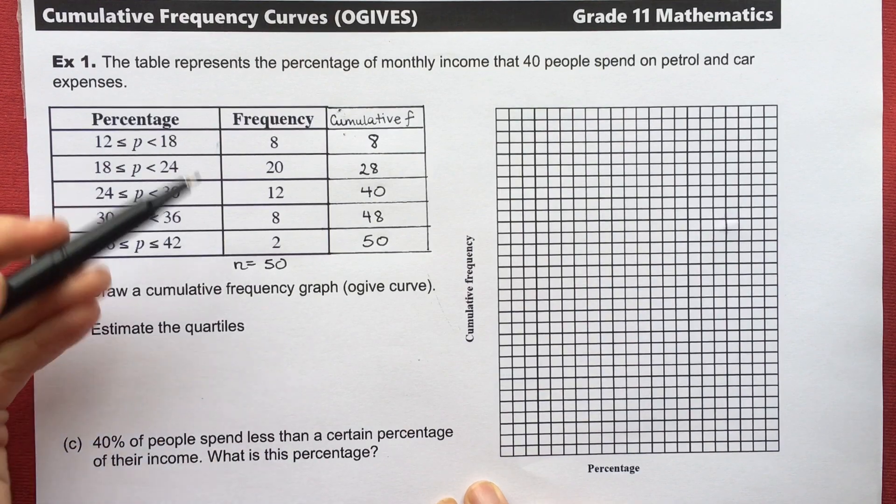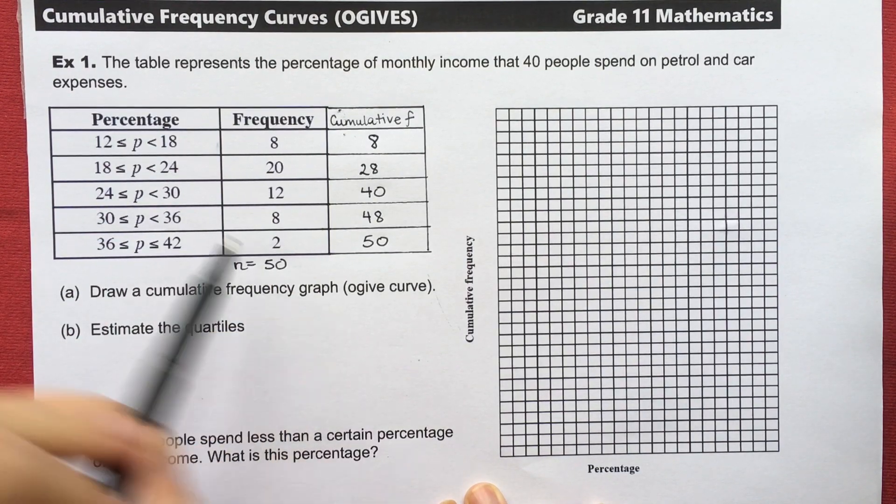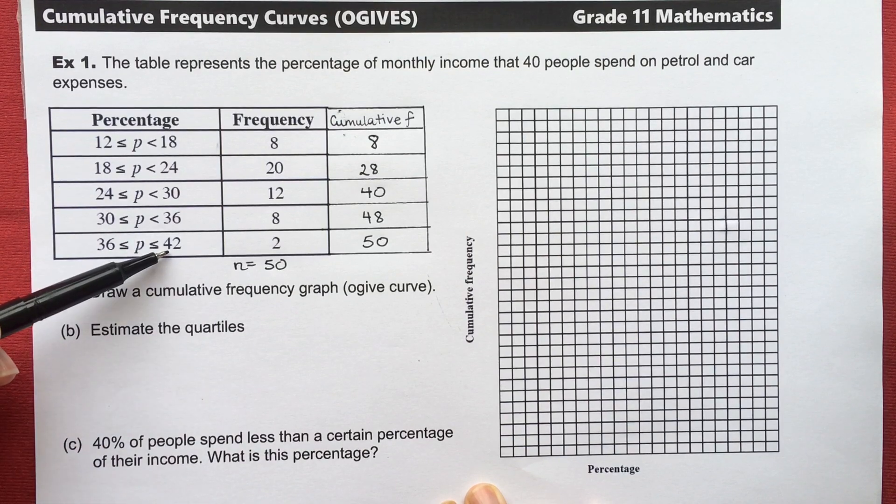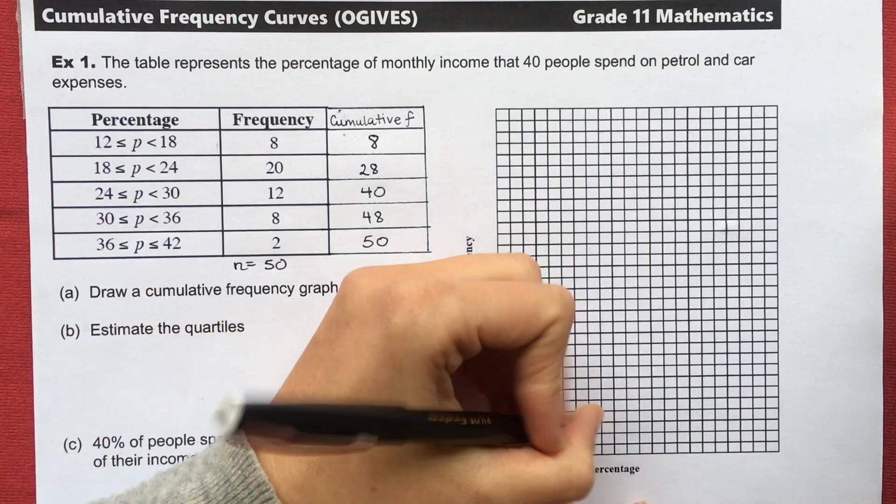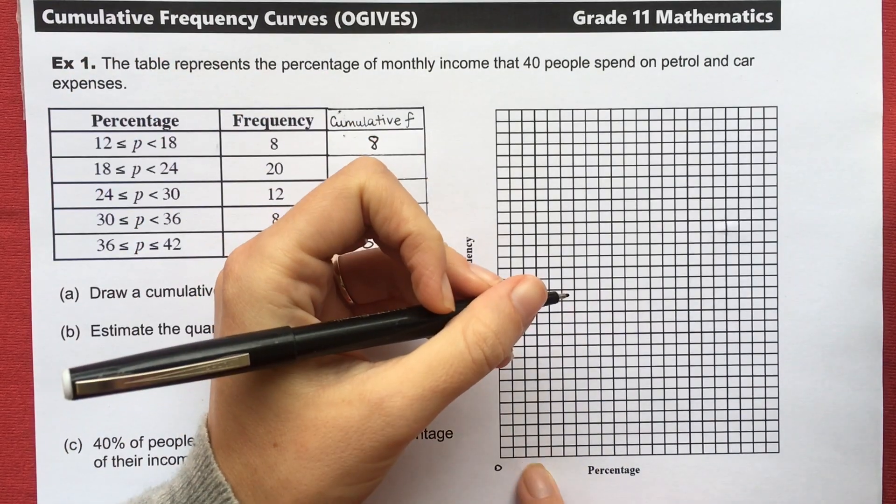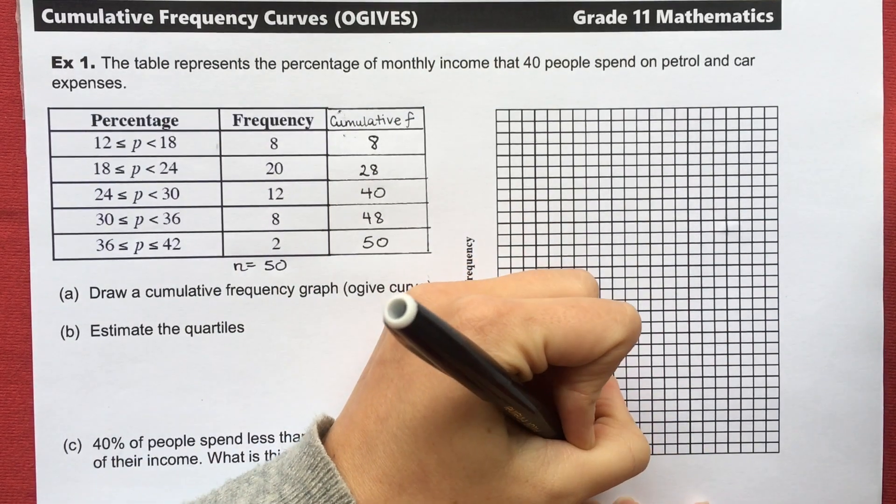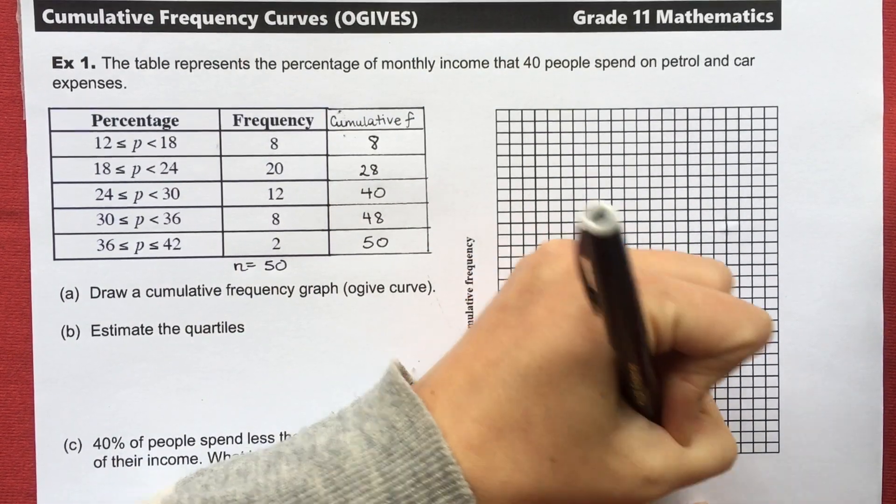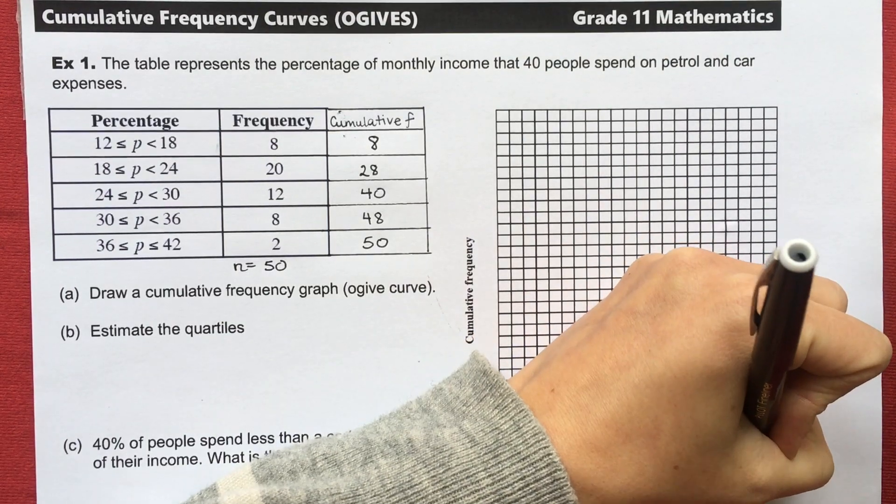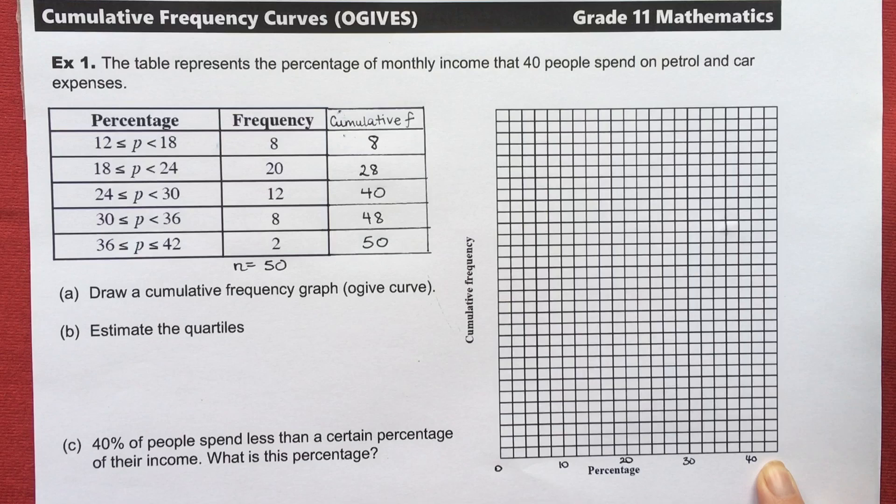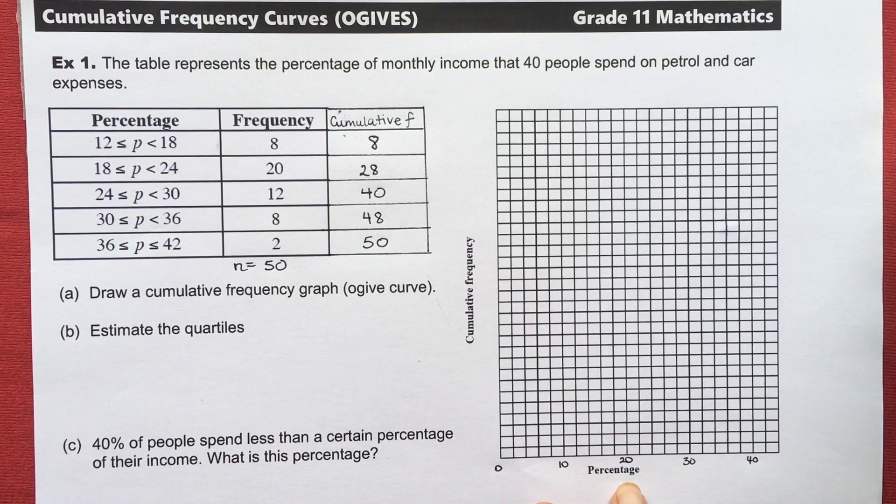Now we need to draw this on our cumulative frequency curve. I need to choose a suitable scale for my axes. I can see that I'm going from 12 to 42. I could start my x-axis at 12, but I'm actually going to start at 0 because I want to show you something. So I have a 0 here. Let's go by 2. So 2, 4, 6, 8, 10, 20, 30, 40. So 42 will be there. I've already got percentage labeled so I'm not going to worry about my x-axis label.